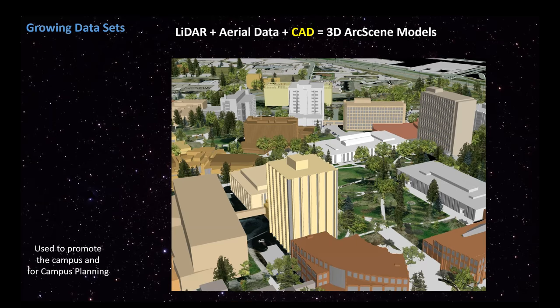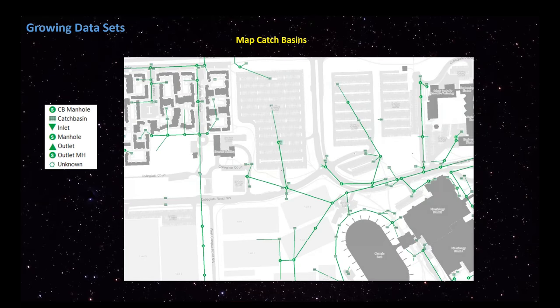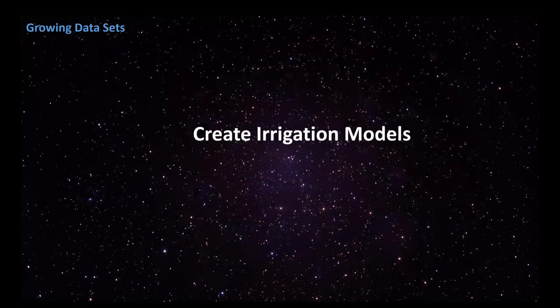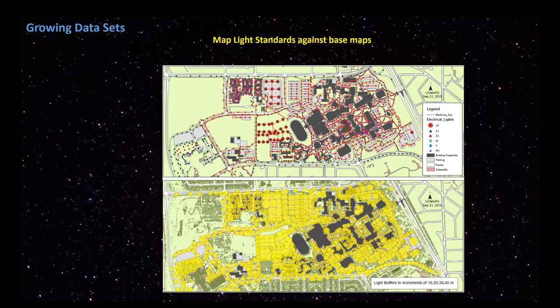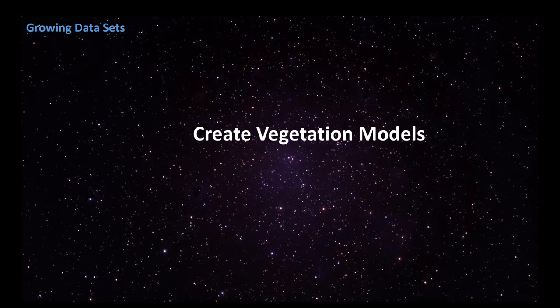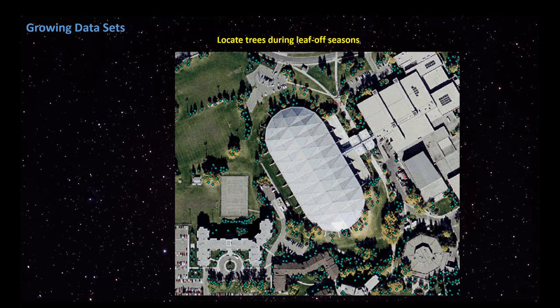We generated catch basin models by gathering catch basins from air photos and putting this data into our base maps and geo database systems. We did the same with irrigation models — converting CAD drawings into the GIS database — and with the electrical. At this stage, all we've been doing is growing our data sets, gathering data, and entering them into our geo database. We also inventoried our trees using photos, intentionally flying in a leaf-off season so we could see the trees, and applied locations so that we now have a good inventory of where all our trees are.